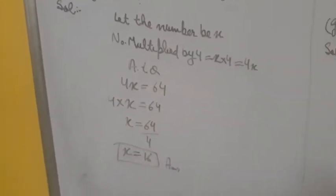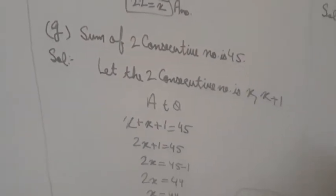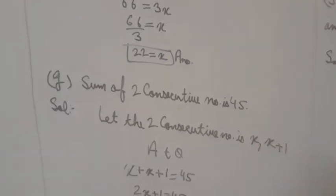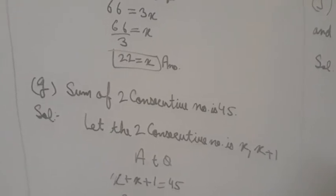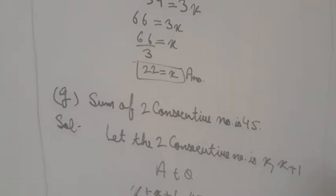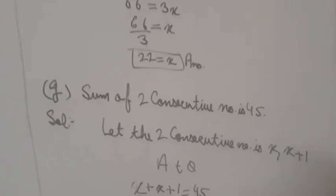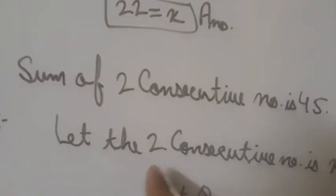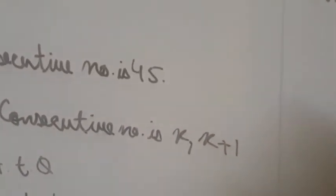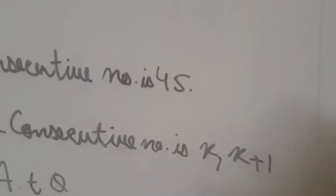Now part H: 'sum of two consecutive numbers'. Children, remember — two consecutive numbers means two numbers that are next to each other, like 3 & 4, 5 & 6, 7 & 8, 15 & 16, 21 & 22. Let the two consecutive numbers be x and x + 1.